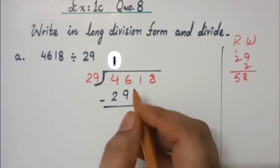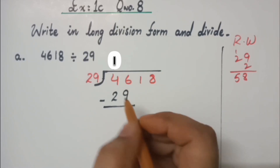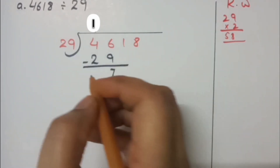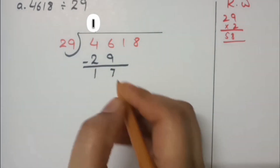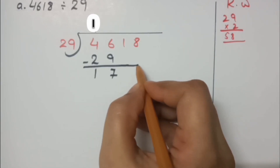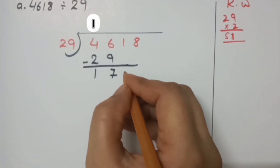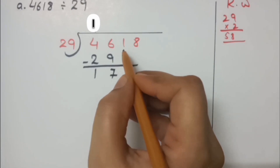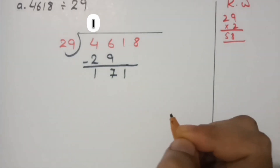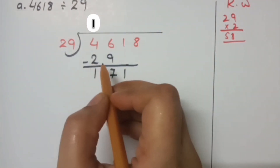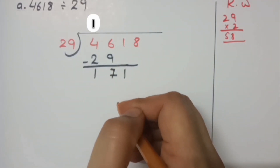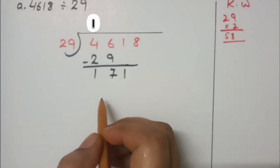Now we do subtraction: 6 minus 9 is not possible, so 16 minus 9 is 7, and then 3 minus 2 is 1. Now we copy down the next digit. The next place value is the tens place — the digit 1. We copy it down here. This is the rule of division: once you solve one value, copy down the next value for further solution.